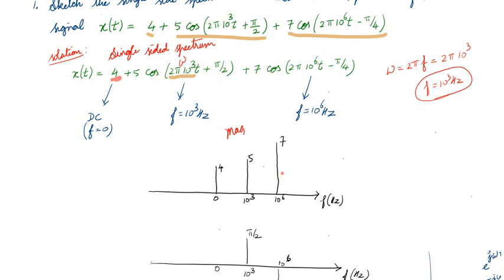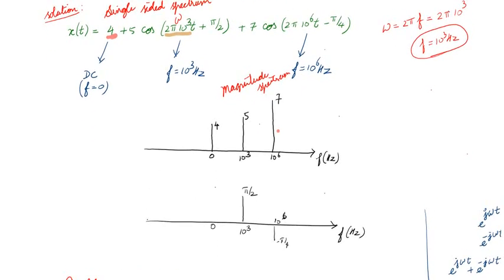Magnitude spectrum of signal x(t). Next we move into the phase spectrum. What is a phase spectrum? It shows the phase angles present at each frequency component. At 0 Hz we don't have any phase angle. At 10³ Hz we have a phase angle of π/2. At 10⁶ Hz we have a phase angle of −π/4. So magnitude versus frequency is the magnitude spectrum, and phase angle versus frequency is the phase spectrum. This is the single-sided spectrum — we have only the positive frequencies.